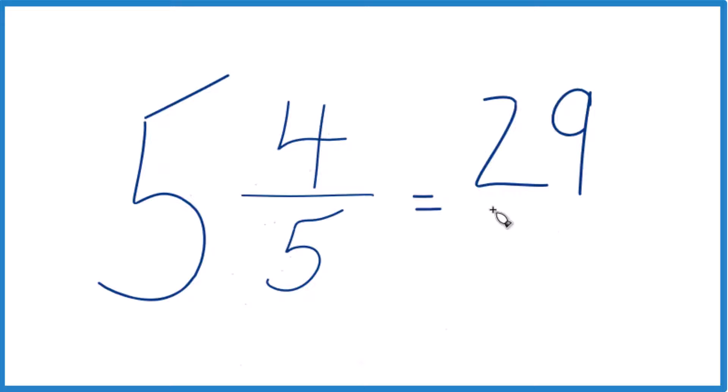That's our numerator. For the denominator, we just bring the 5 across and that's it. We have our improper fraction, 29 fifths. That's the improper fraction for the mixed number 5 and 4 fifths.